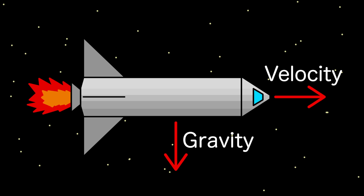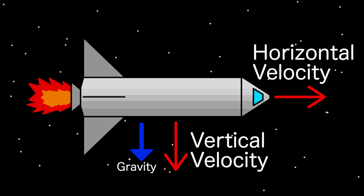Velocity is a vector, meaning it has a magnitude or some value and a direction. Here we can break it up into two components: vertical velocity and horizontal or tangential velocity. During orbit, the vertical velocity will be close to zero, otherwise we would drift either towards or away from Earth.